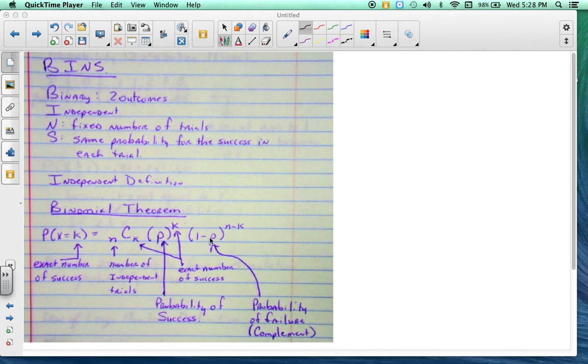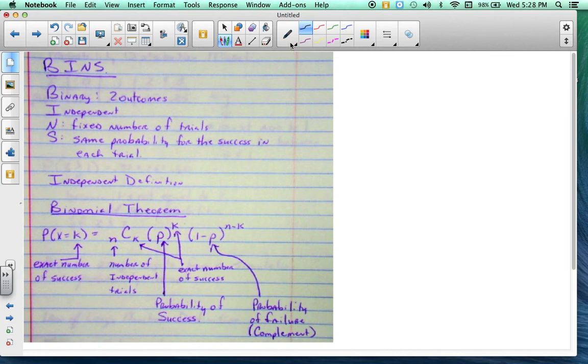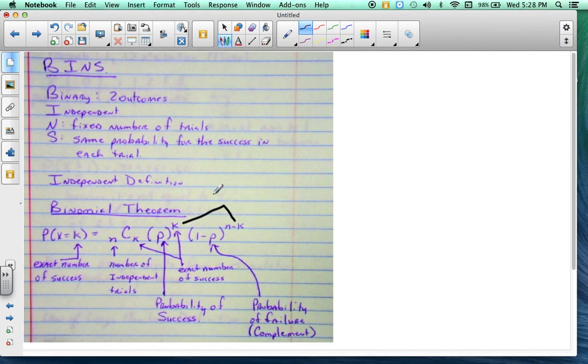Remember, this is the complement, so it's the probability of failure, and then n minus k. You might want to recall that this right here and this right here will add up to n. So make sure that those add up to n.